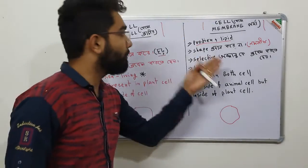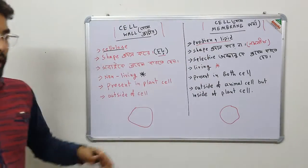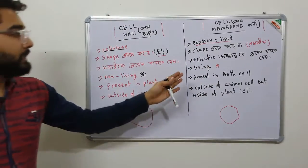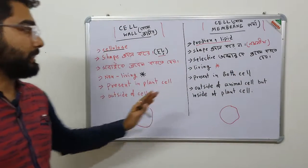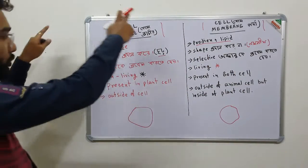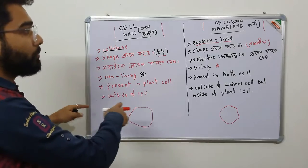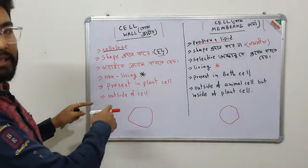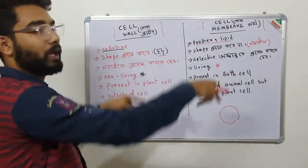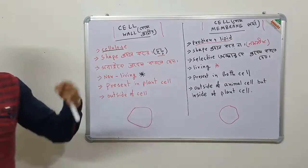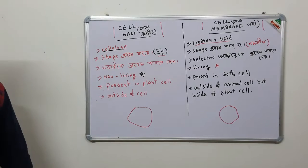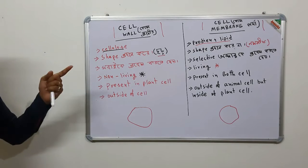The cell membrane is found in both plant and animal cells. Let's see them now.